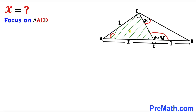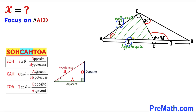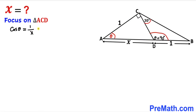Now let's focus on right triangle ACD and recall SOH-CAH-TOA. We are interested in cosine of theta, which equals adjacent divided by hypotenuse. In our case the adjacent is 1 and the hypotenuse is x. So cosine of theta equals 1 divided by x. Let's call this equation number 1.